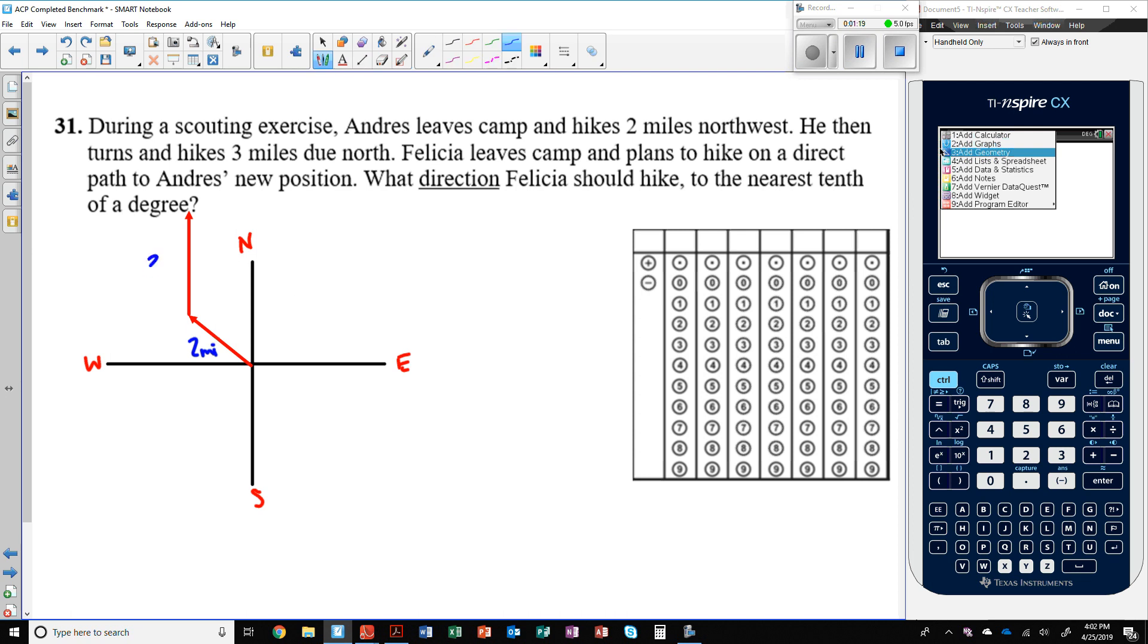So he does this for three miles. We want to know if Felicia were going to hike straight to his point from camp. What direction should she hike? That's what we want to know. We're looking for the direction. And so I'm going to put here so we don't forget. We're looking for this angle. What direction should she hike? We know it's going to be to the northwest, but we don't know how many degrees.